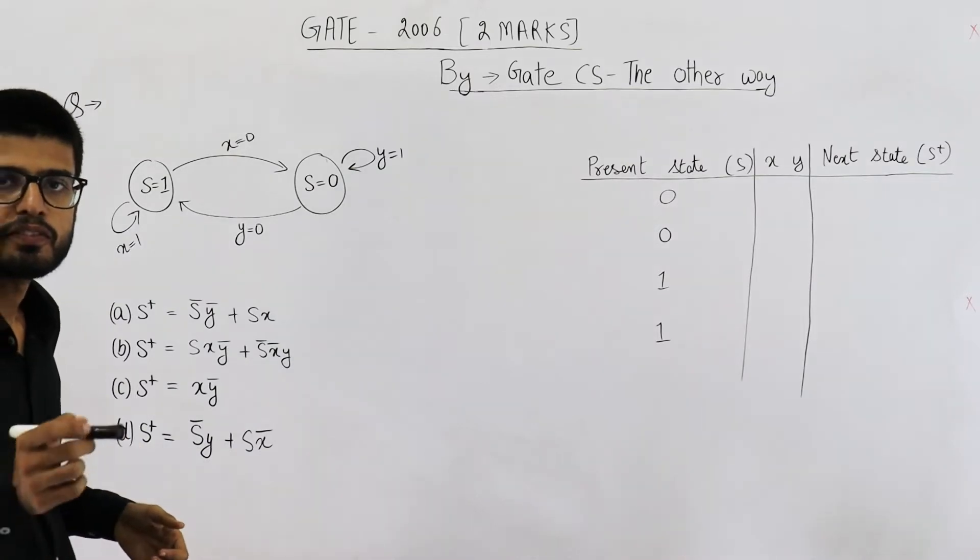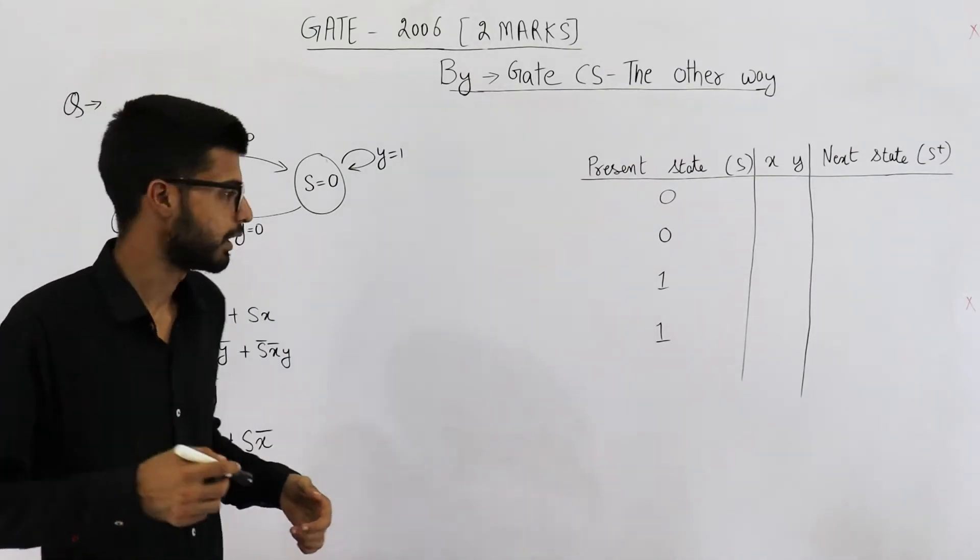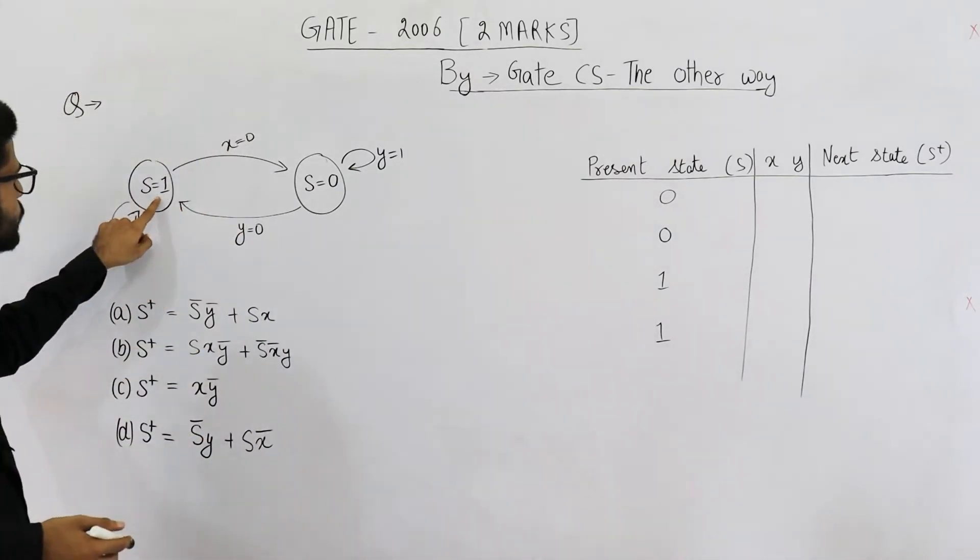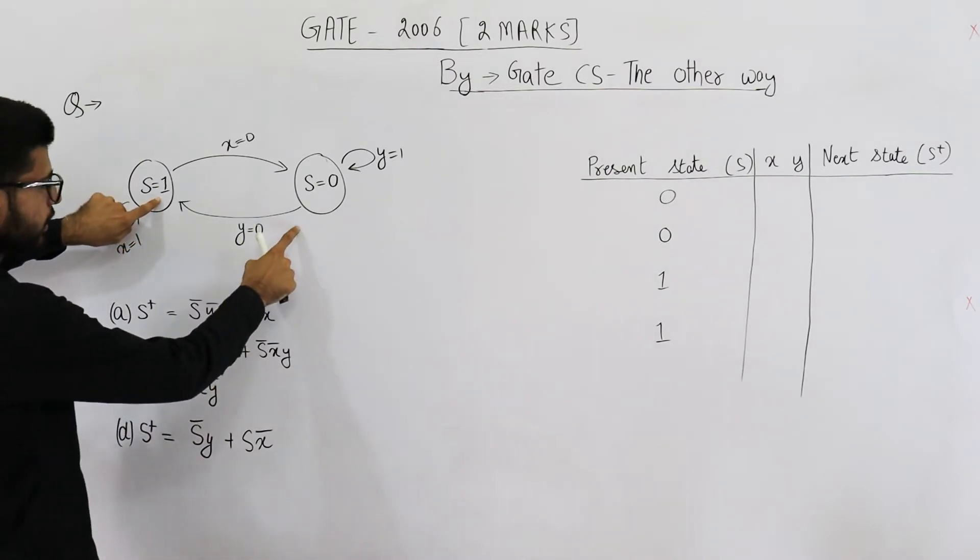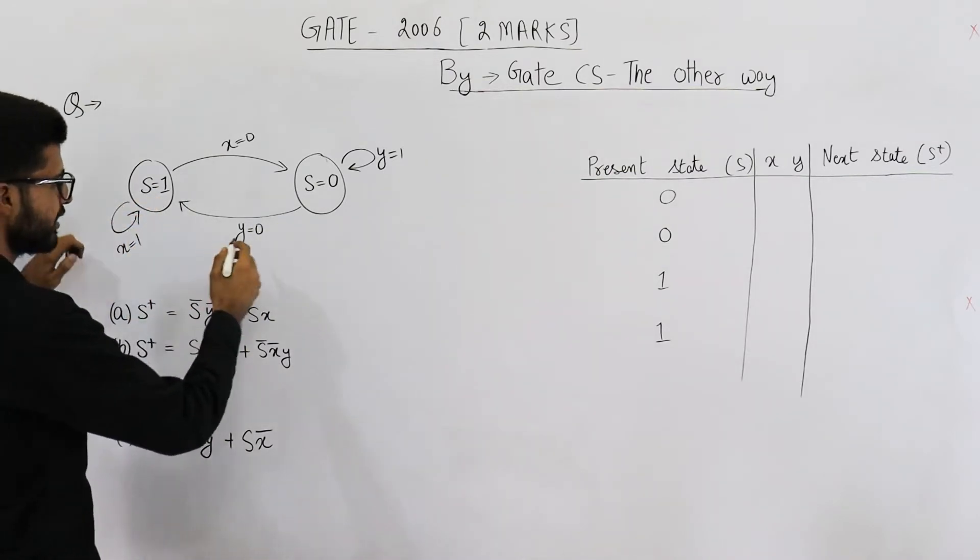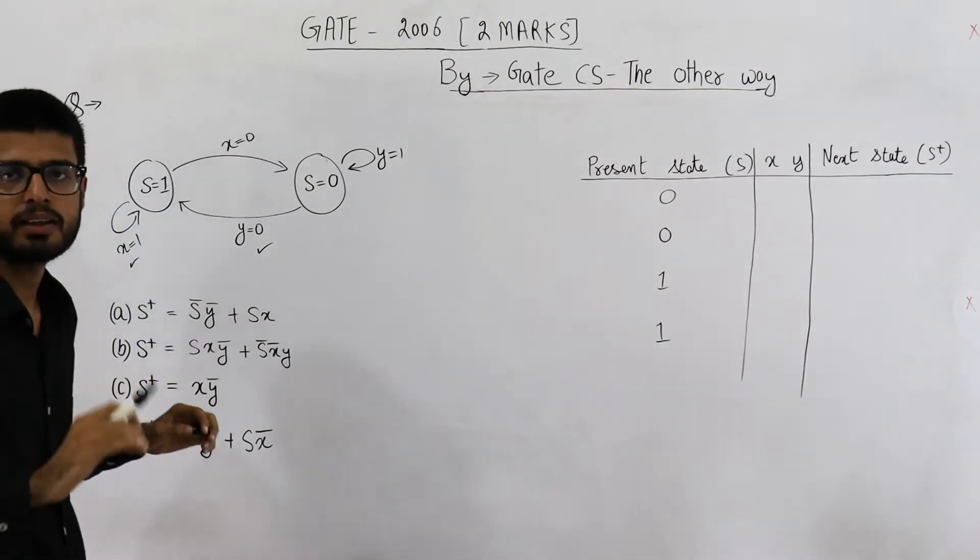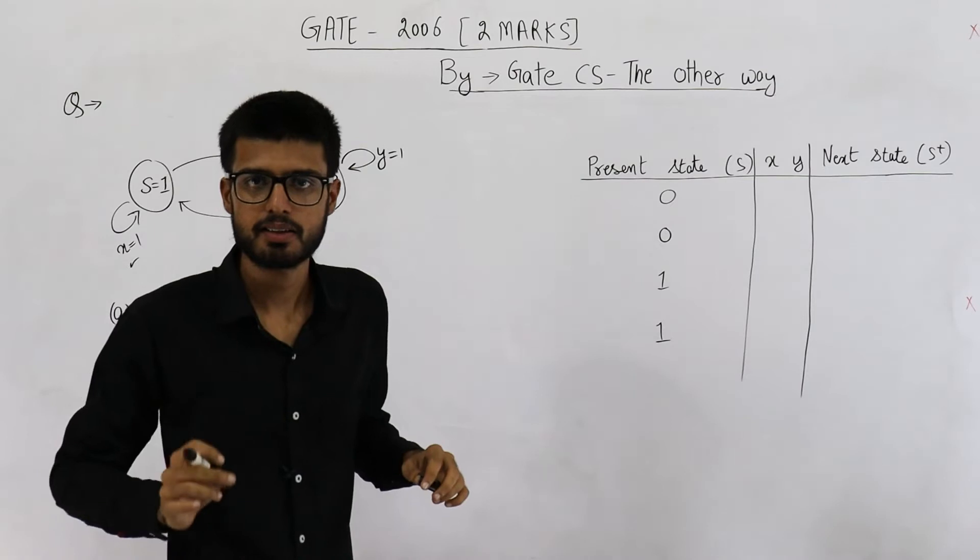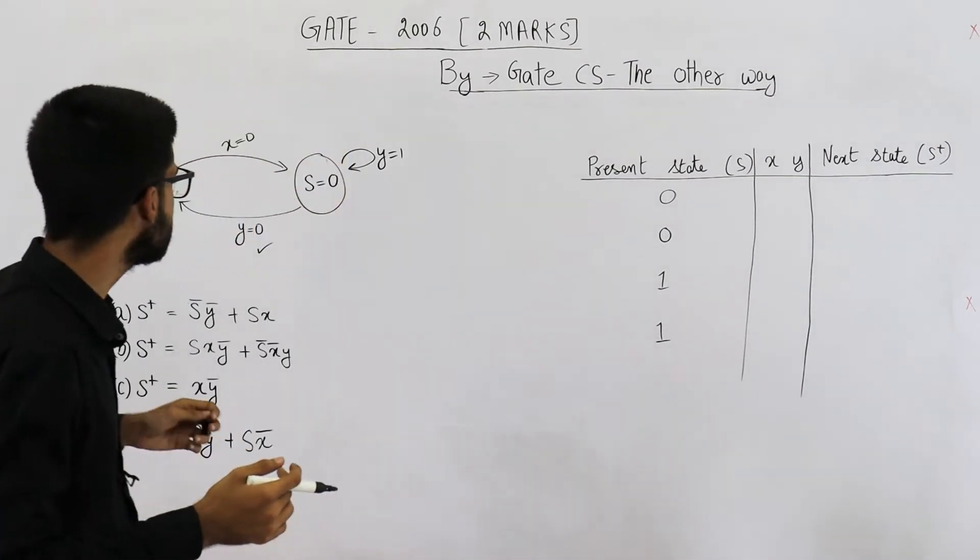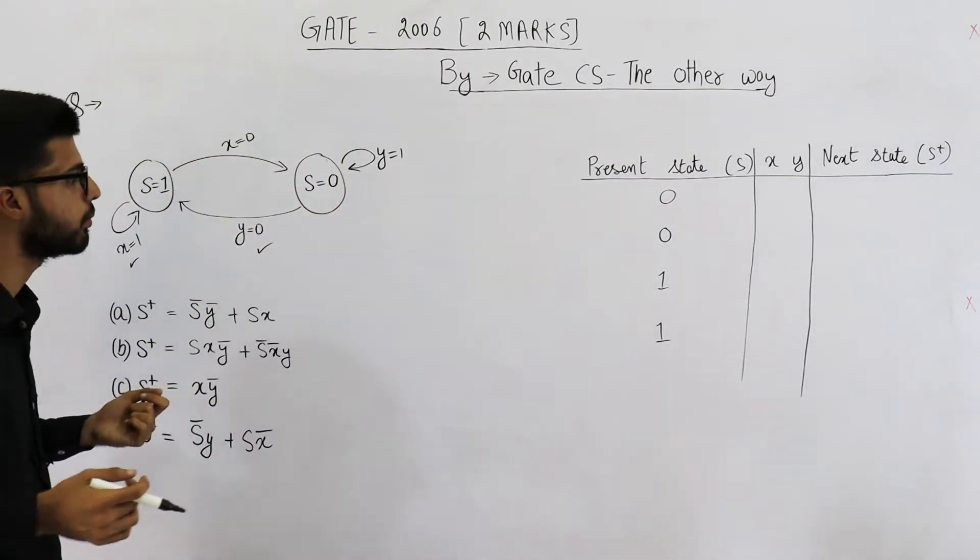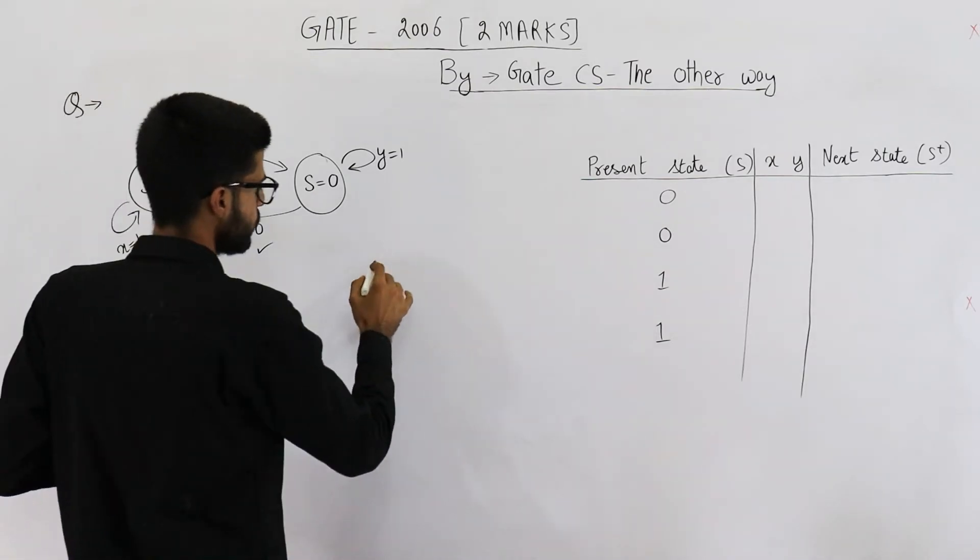Let us see when is the next state 1. Next state is 1 if you take this transition. First choice is you take this transition or this transition. Only in these two cases, the next state is going to be 1. If we consider the next state as a variable, what will be the expression of this variable?